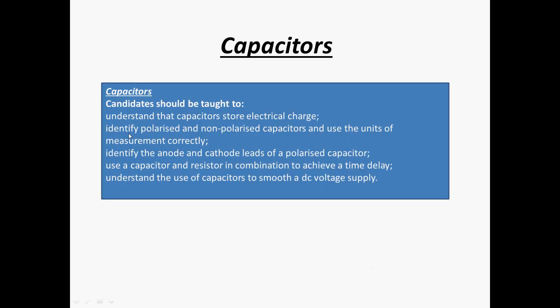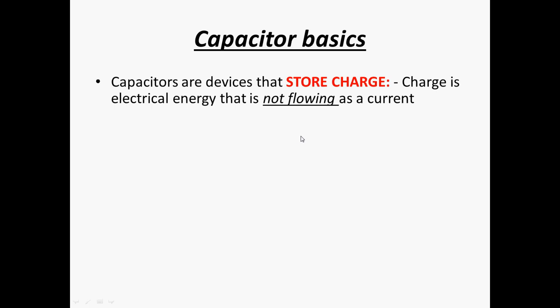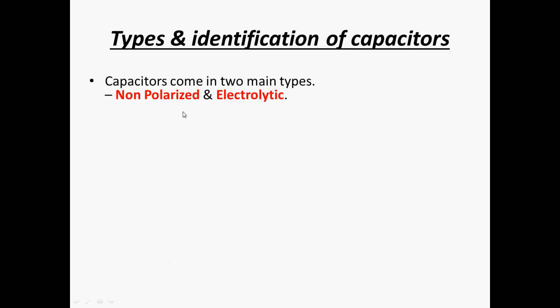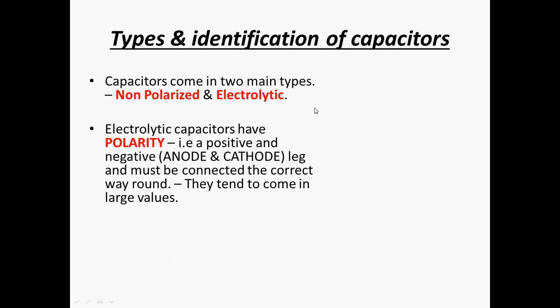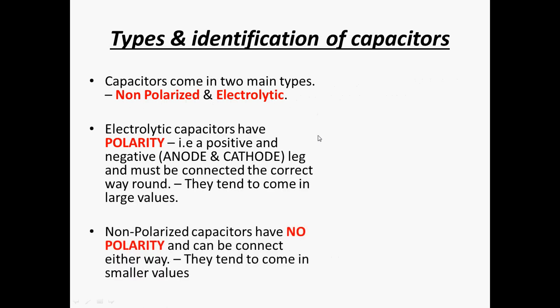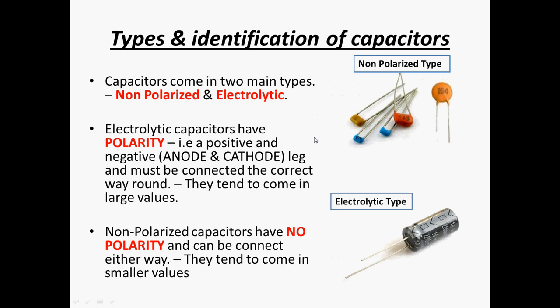So, let's quickly go on to this. Types and identification. This is what the spec says you need to know. Identify polarised, non-polarised. Two main types. Non-polarised, electrolytic. They do the same job. They both still store charge. However, they look different. And they are connected to a circuit differently.